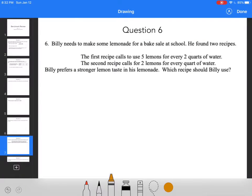Billy needs to make some lemonade for a bake sale at school. He found two recipes. The first recipe calls for five lemons for two quarts of water. The second recipe calls for two lemons for every quart of water. Billy prefers a stronger lemon taste in his lemonade. Which recipe should he use?